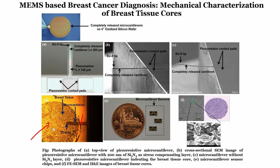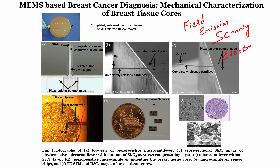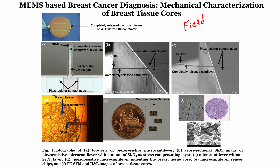When we performed field emission scanning electron microscopy, FESEM, on slices of breast tissue, we found that normal tissues have a much smoother surface compared to cancerous tissue — cancerous tissue is much coarser. So normal tissues are smooth and cancerous tissues are rough.